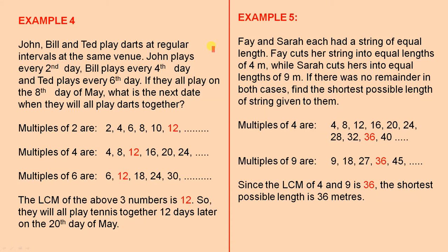Example 4, John, Bill and Ted play darts at regular intervals at the same venue. So, John plays every second day, Bill plays every fourth day and Ted plays every sixth day. If they all play on the eighth day of May, what is the next date when they will all play darts together?